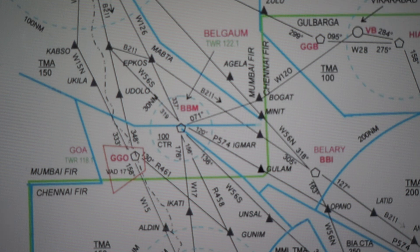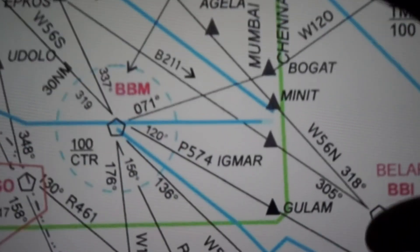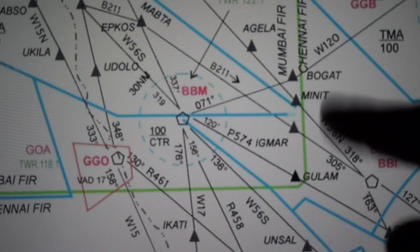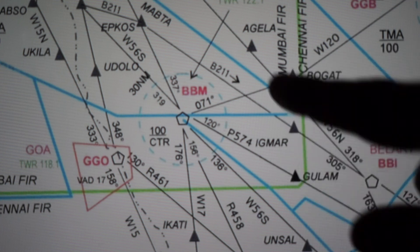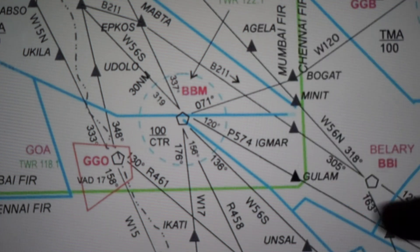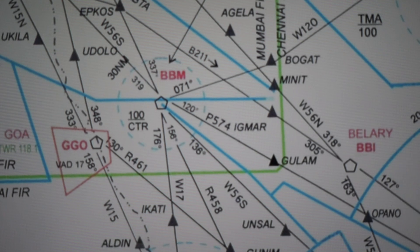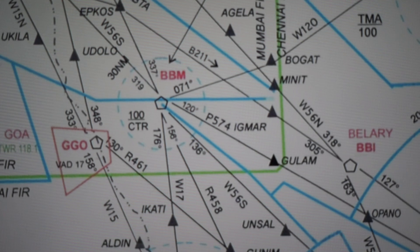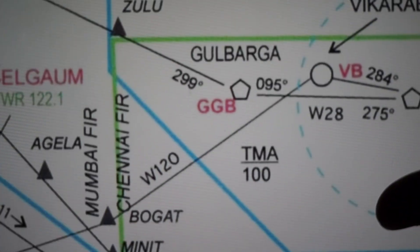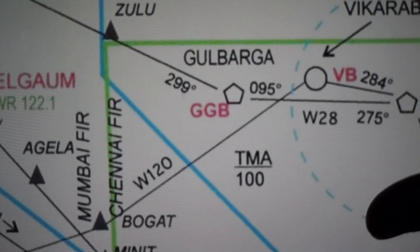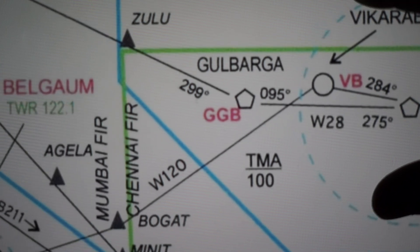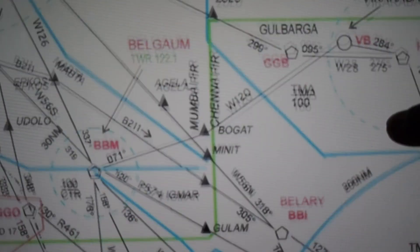An interesting thing about mandatory waypoint names is that most of them will have two vowels in them — probably for easier pronunciation. For example, Bogart has O and A, Agela has E and A, and Gulam has U and A. So most of them have two vowels. Also, the circles on this chart, such as Victor Bravo, are NDBs — Non-Directional Beacons.